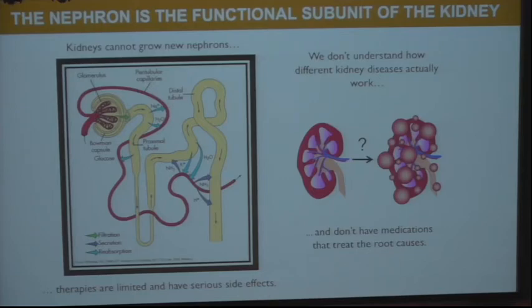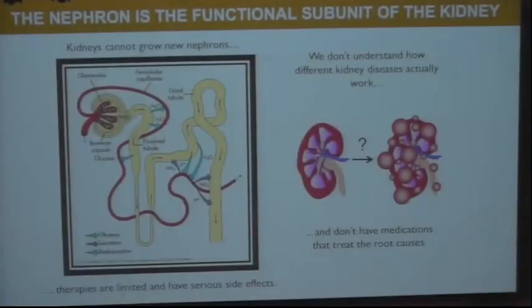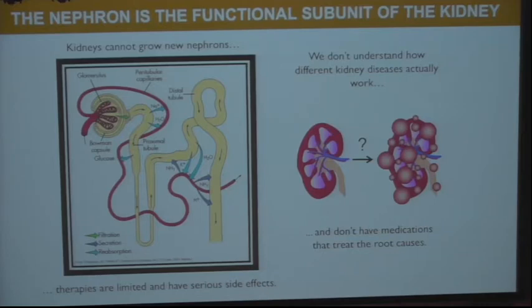We can't regrow nephrons — if we lose them, they're gone forever. This is what causes chronic kidney disease: the progressive loss of nephrons. The therapies we have are limited and have serious side effects. We don't understand how the different kidney diseases that make up the spectrum of CKD actually work at a cellular level, and as a result we haven't developed medications that treat the root causes.